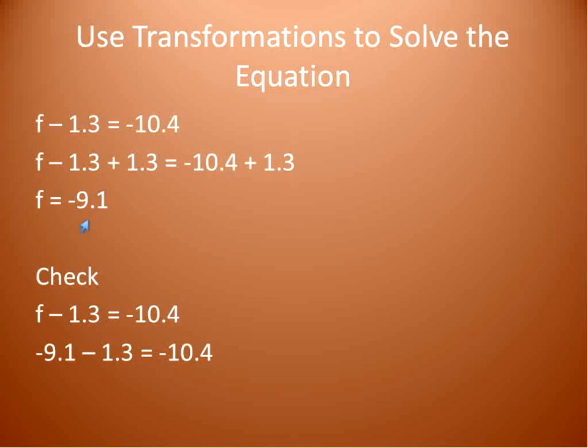I take the answer I got, -9.1, and I'm going to substitute that into the original equation, -9.1. Or, yeah, -9.1 for f - 1.3 should give me 10.4. So, let's see what happens. Look at that. -9.1 plus or minus 1.3 gives us -10.4. And that is the final solution to this equation. All right? That's the last sample question. Hope that lesson's been helpful for you. Have a wonderful day.